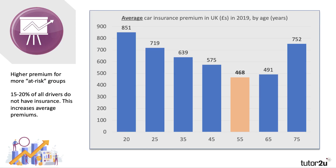Can you use some economics to help explain the data in the following chart? This chart shows the average car insurance premium in the UK in pounds per year, organized by age: 20, 25, 35, 45, and so on up to age 75. You can see there's quite a big difference in average car insurance premiums.